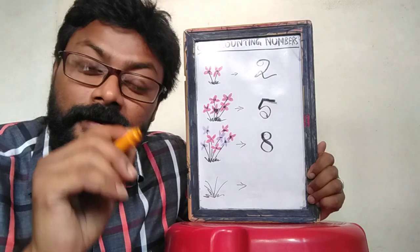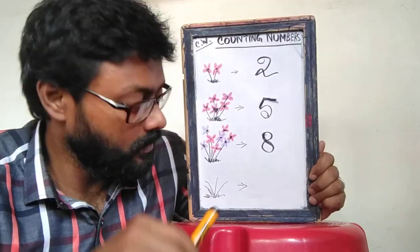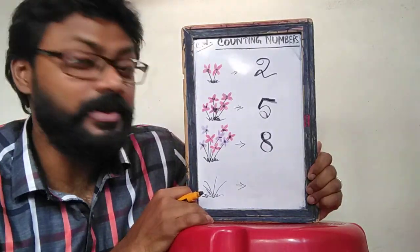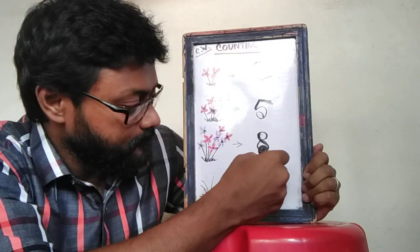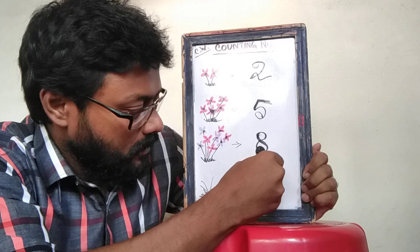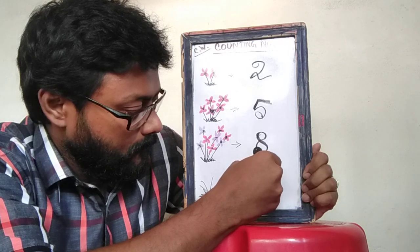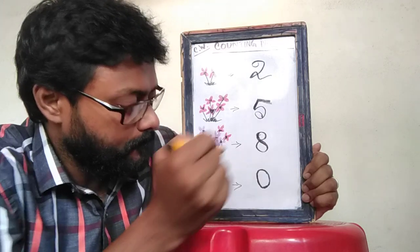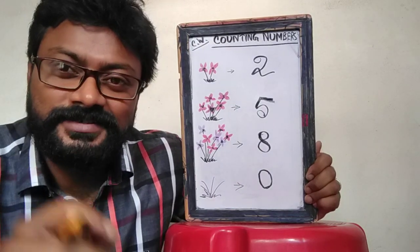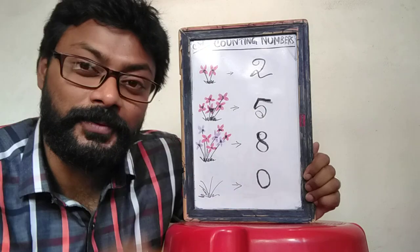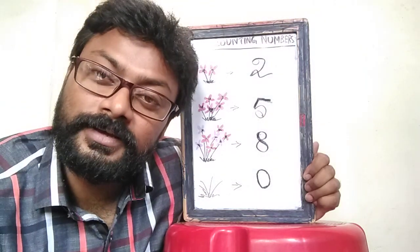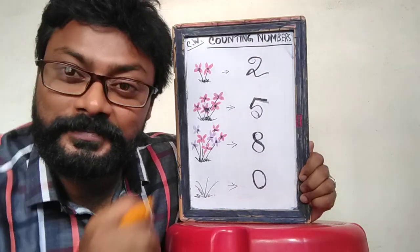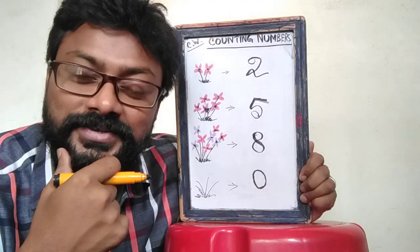And now the last one is very interesting. Can you see? There are no flowers. When there is nothing, it's called a 0, and we write 0 like this. So that's a 0 — that's how we write 0. When there is nothing, we call it 0. That means 0 is nothing. Today we learned how to write 0 and what is the concept of 0.